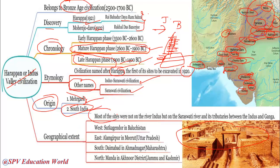Regarding geographical extent: most sites are not only on the River Indus — most sites are actually on the River Saraswati, which is a tributary of both the Indus and Ganga. The westernmost site is Sutkagen-dor in Baluchistan. The easternmost is Alamgirpur in Meerut. The southernmost is Daimabad in Ahmednagar, Maharashtra. The northernmost is Manda in Akhnoor district of Jammu and Kashmir.